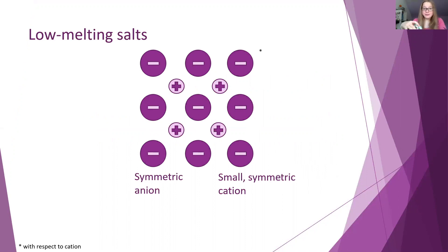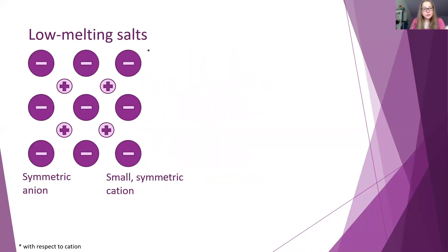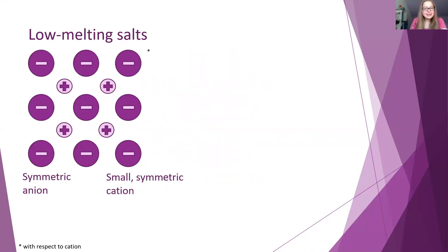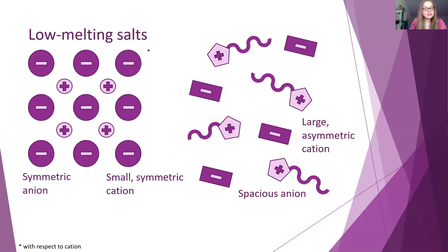The melting point of ionic liquids, however, lies far below that of most salts. This is because the ions are large, bulky, asymmetrical components whose charge is distributed over a wide space, and this inevitably leads to weaker interactions as well as a destabilized crystal structure and lower melting point.